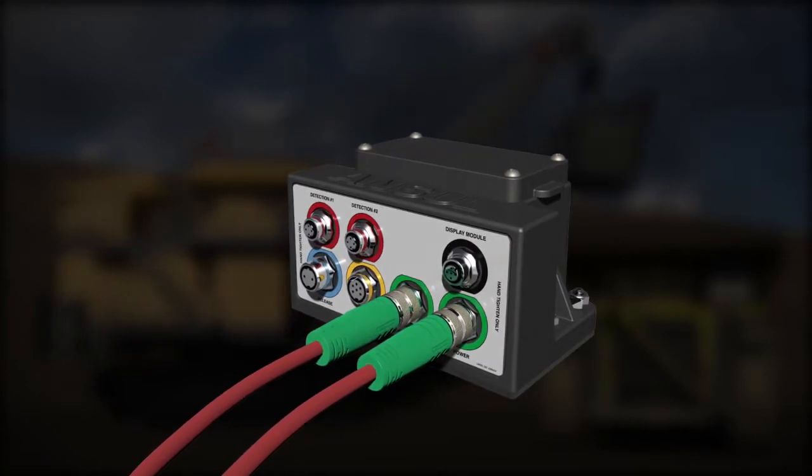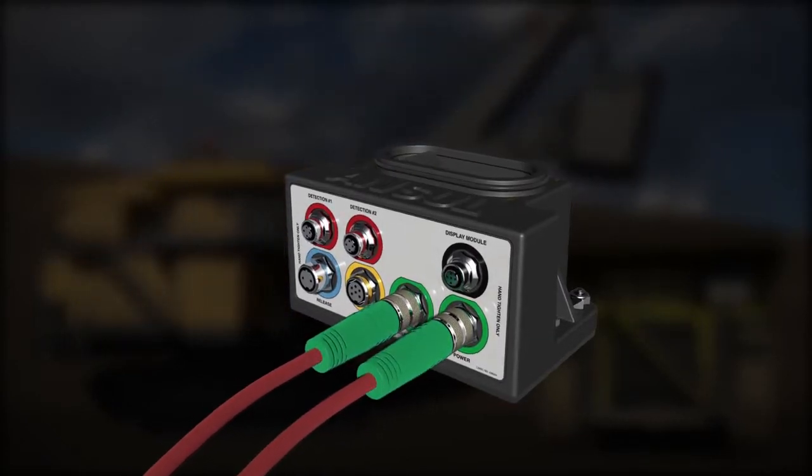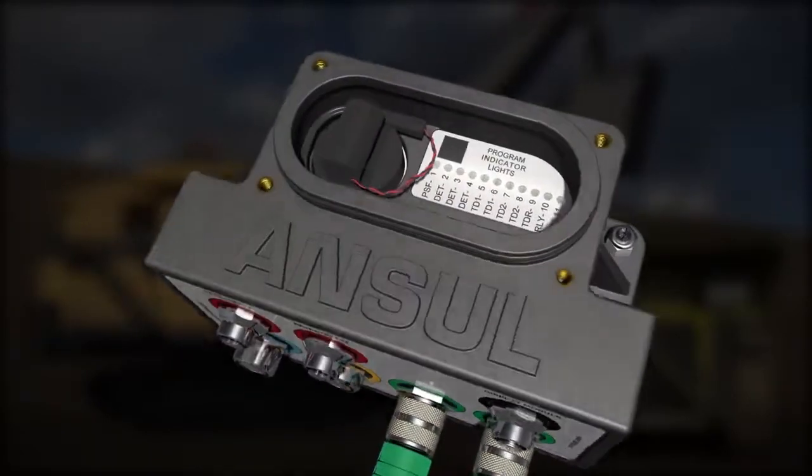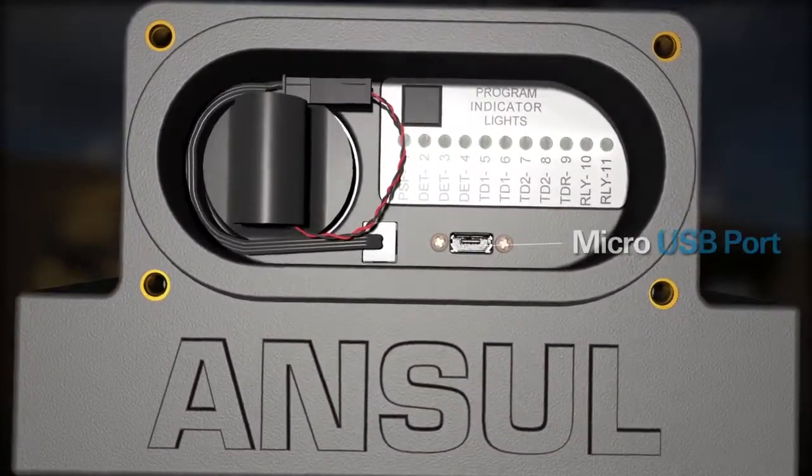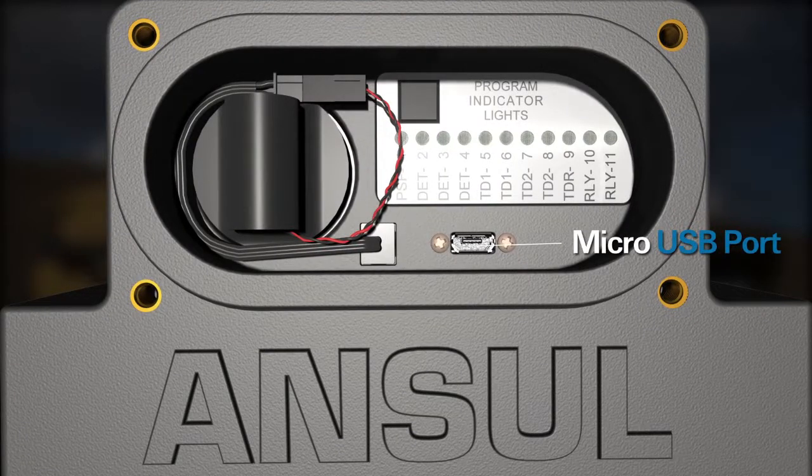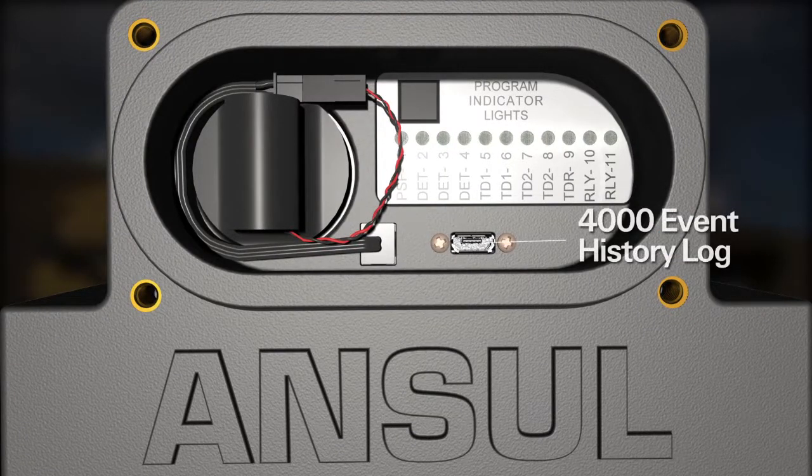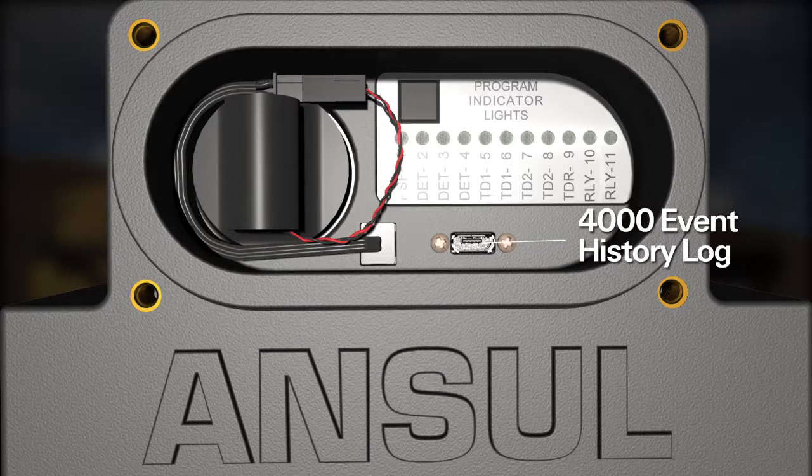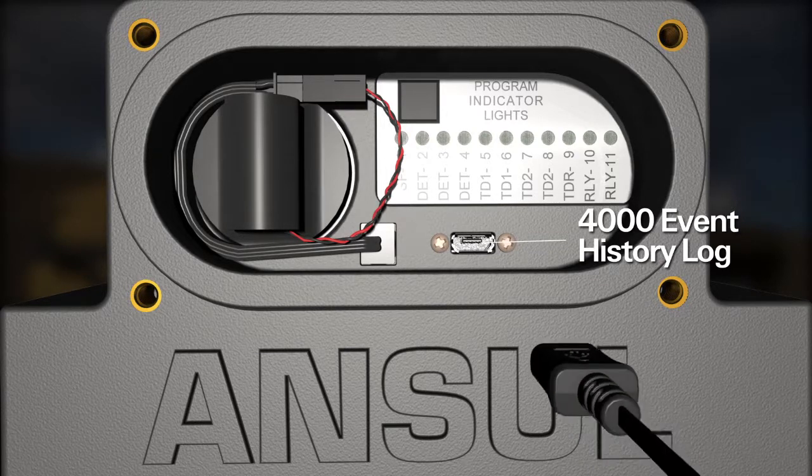Detection options, time delay duration, and two internal relays to control external functions may be programmed manually or by computer via a micro USB port. The CheckFire 210 has a 4000 event history log that can be downloaded through the USB port.